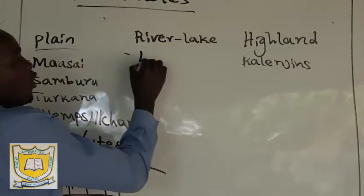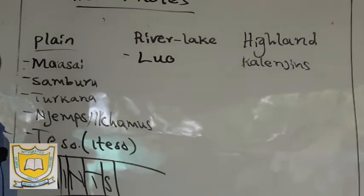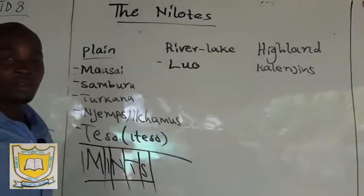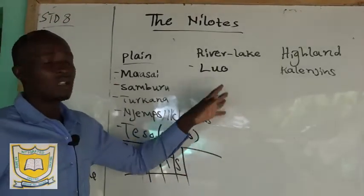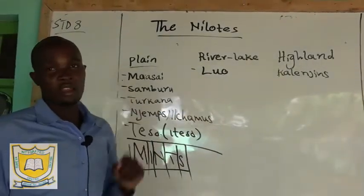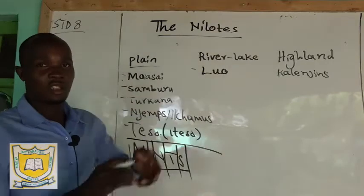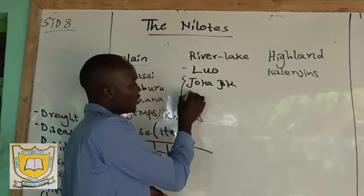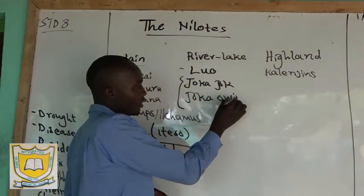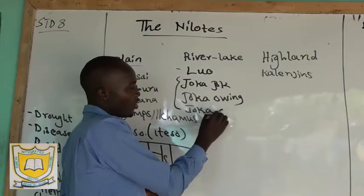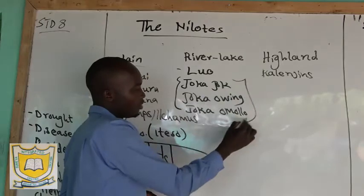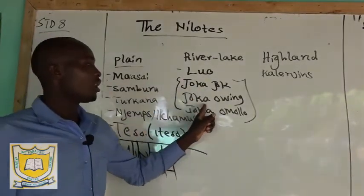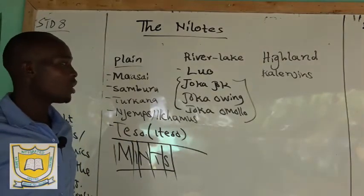For the River Lake Nilots, there is only one community in Kenya — the Luo. They are found on the shores of Lake Victoria. Originally their main economic activity was pastoralism, but nowadays some of them have turned to fishing. The Luo are divided into three sub-groups: Jok, Jok Owiny, and Jok Omolo.